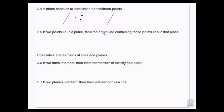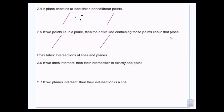If two points lie in a plane, then the entire line containing those points lies in that plane. It's like a piece of paper: if I have a piece of paper and I put two points on that piece of paper, and then my two points are connected with a line, is the line on the paper? It is. So if the points are on the plane, then the line is on the plane — just like if the dots are on the paper, the line connecting the dots has to be on the paper. It's not floating off in space somewhere.